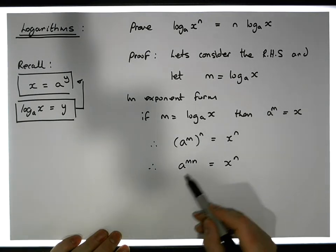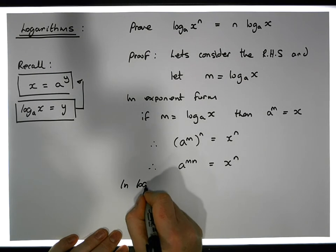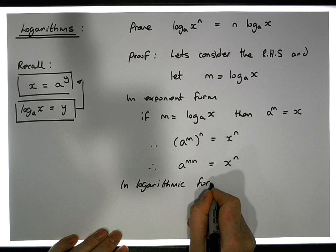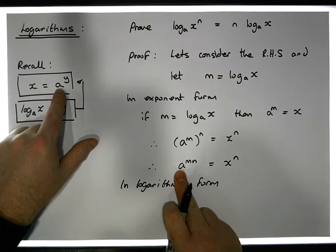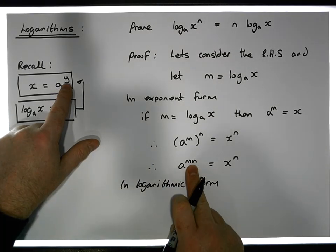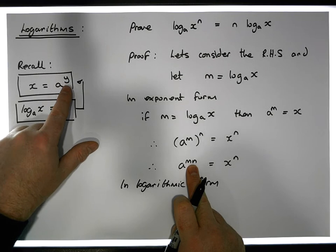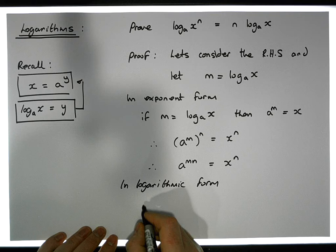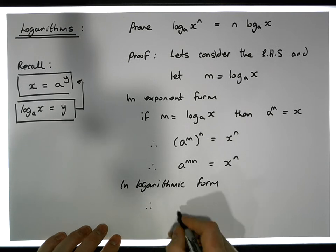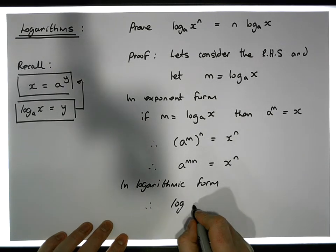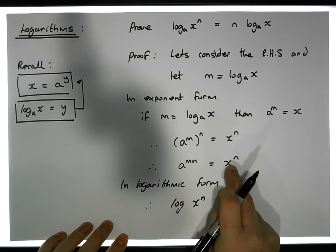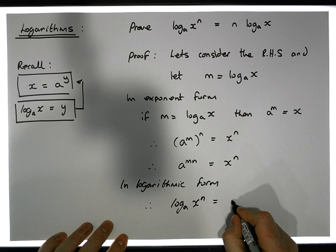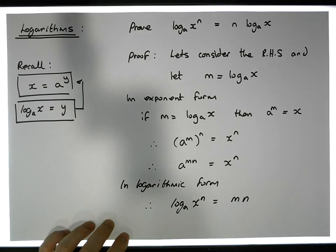So a to the mn is equal to x to the n. What does this tell us in logarithmic form? Well, we have some number a raised to a particular power equal to some other number, so in logarithmic form this tells us that the log of x to the n, to the base a, must be equal to mn.